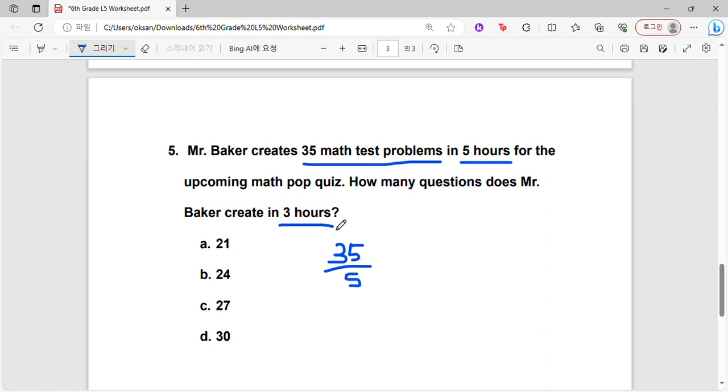Again, you just have to do 35 divided by 5, or to give a visual, you need 1 here because we're trying to find the rate, which is the amount of math test problems that were created per hour. So divide 5 here and then 35 divide 5 at the top. Same thing—35 divided by 5 is 7. So this shows that seven questions are created in one hour.